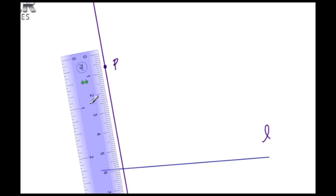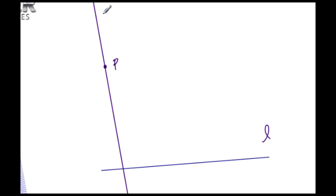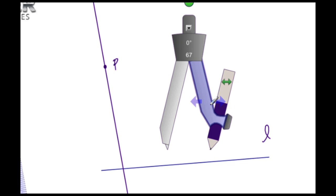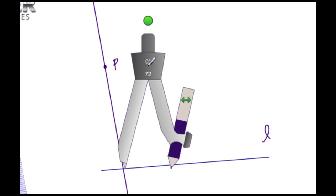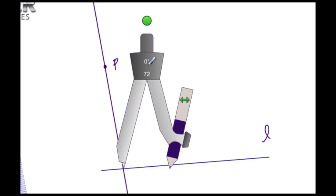Once this transversal is constructed going through P, let's go ahead and pull out our compass tool. We need to set the radius of the compass to some arbitrary length.